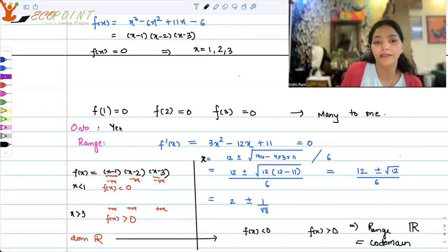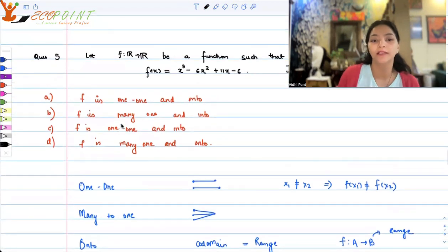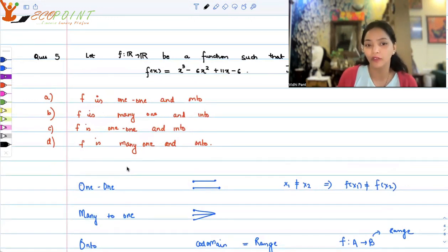So onto, yes, it is onto. So which would be the correct option? That means this function is not one-one. It is turning out to be many-to-one. So it's a many-to-one and onto function. So D is the correct option. It's a many-one and onto. Thank you.